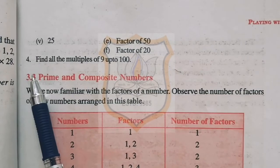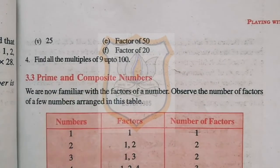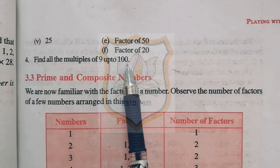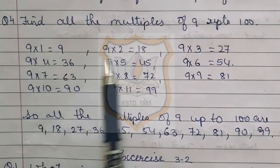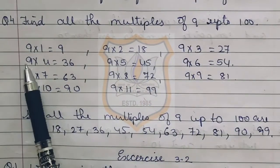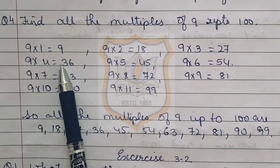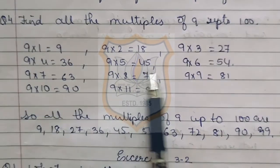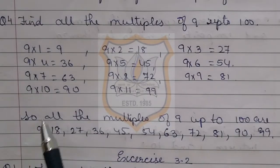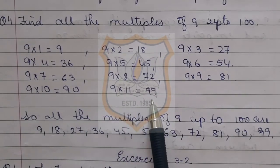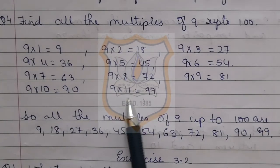Question number 4 of Exercise 3.1: find all the multiples of 9 up to 100. We have to write the table of 9, keeping only numbers below 100. So: 9, 18, 27, 36, 45, 54, 63, 72, 81, 90, 99. At 9 × 12 = 108, which exceeds 100, so we stop at 9 × 11 = 99.